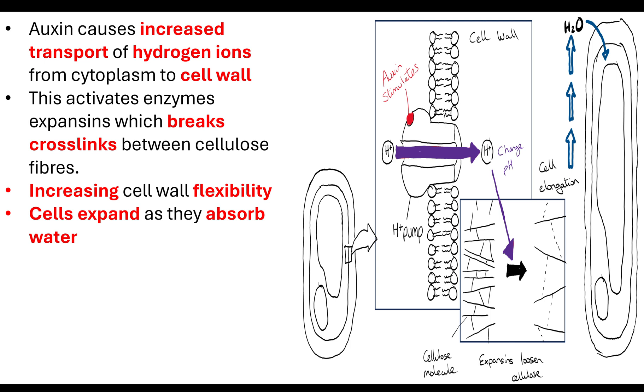As the auxin starts to decrease, the expansins become inactive, and the cell wall becomes rigid again. As pH starts to rise because auxin levels decreased, that's changing the enzyme's shape. Going back to our enzyme module, if we change the pH away from optimum, the expansins change their tertiary structure and won't be able to break those cross bridges anymore. The cell will grow up to a point where it will no longer take in more water because the cell wall is now rigid again.